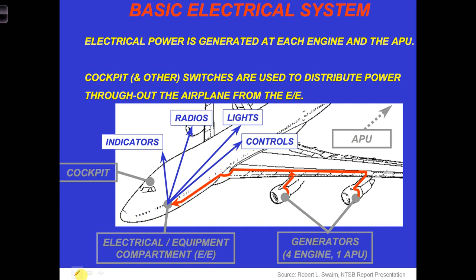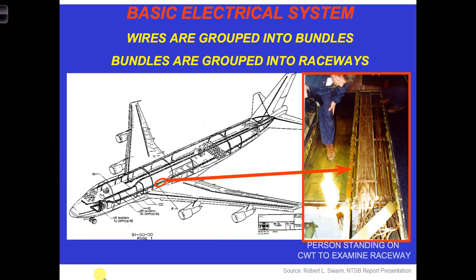Here is an image of the basic electrical system of a Boeing 747. This image was included in a National Transportation Safety Board presentation about the TWA 800 explosion. Electrical power is generated at each engine, and cockpit switches are used to distribute the power throughout the airplane. As shown here, there are many cables and wires in an aircraft used to distribute the power and electrical signals. These wires are grouped into bundles, and the bundles are grouped into raceways.